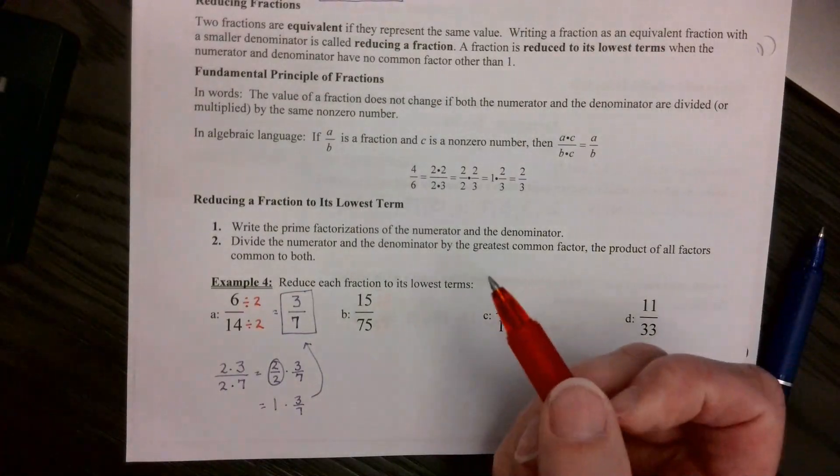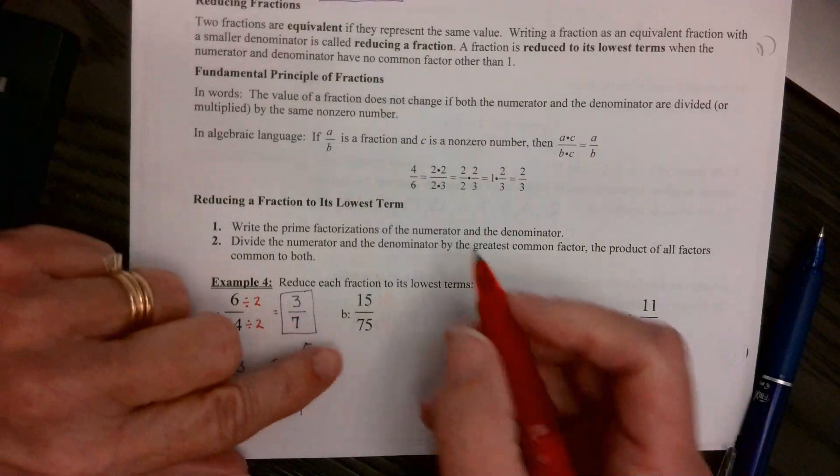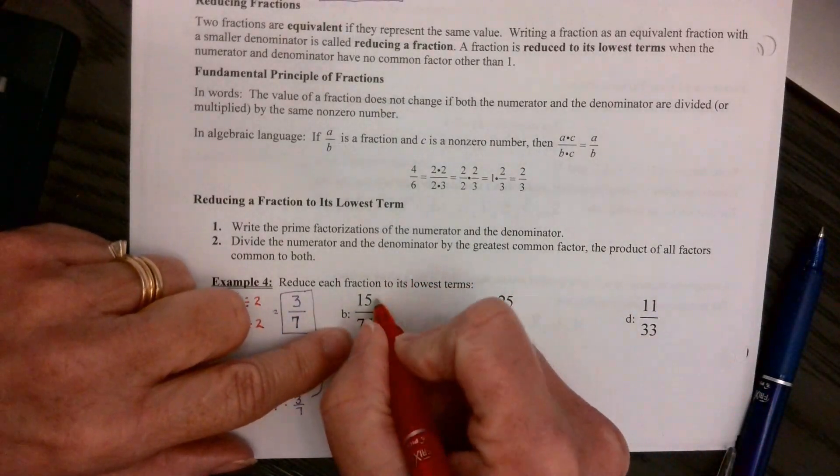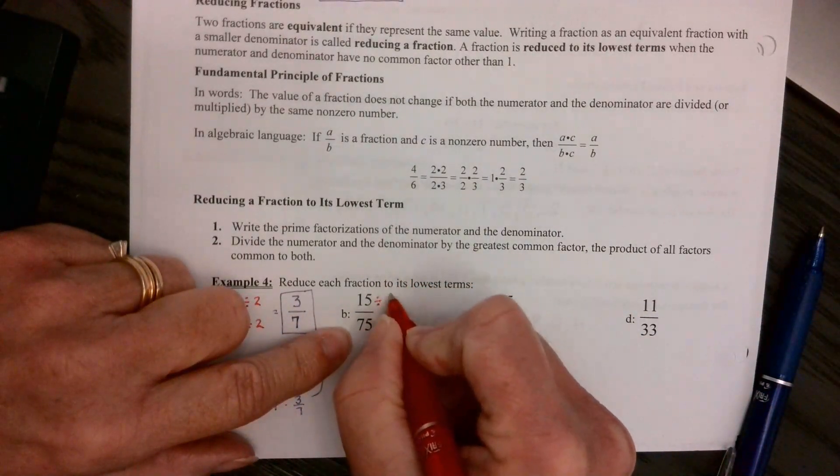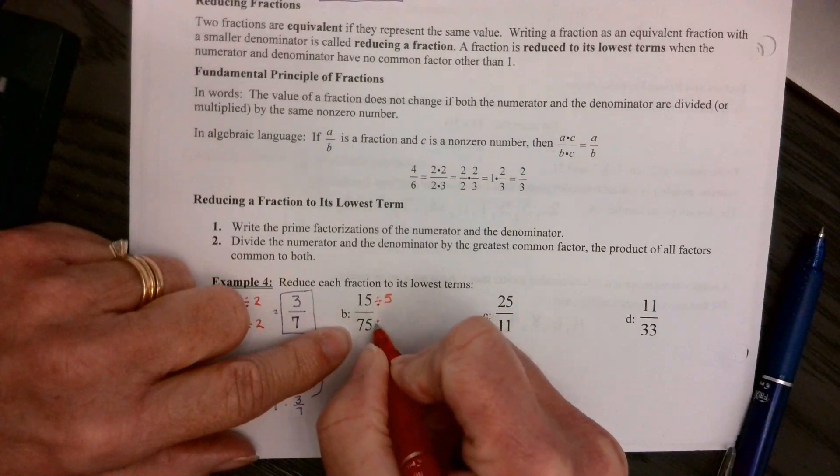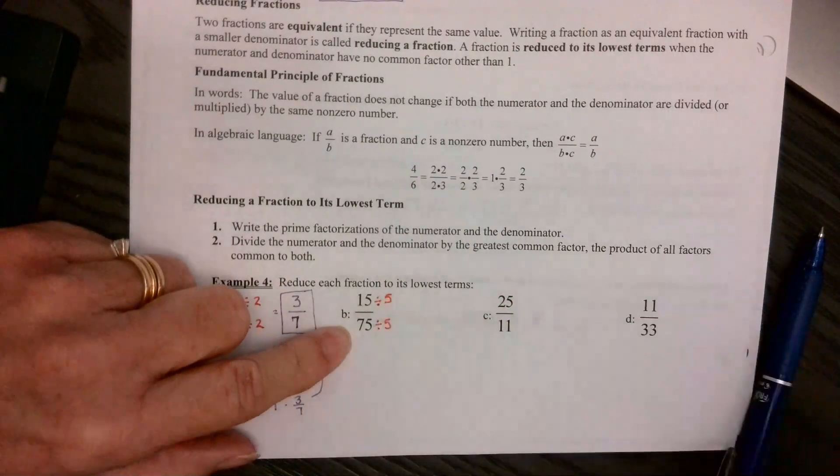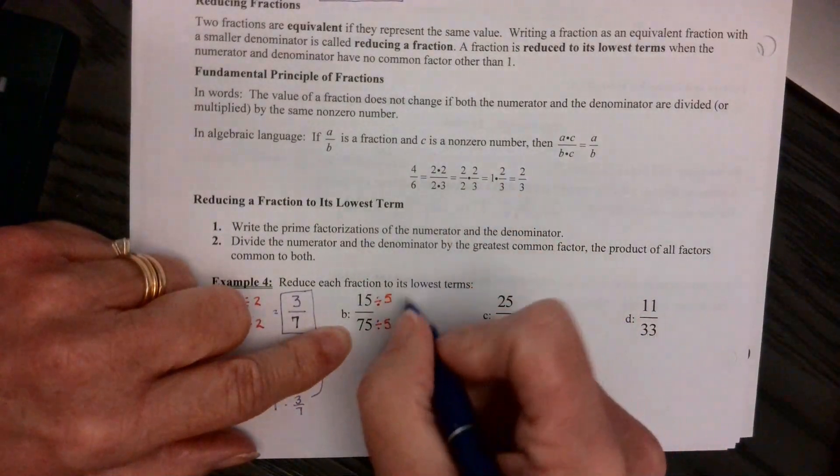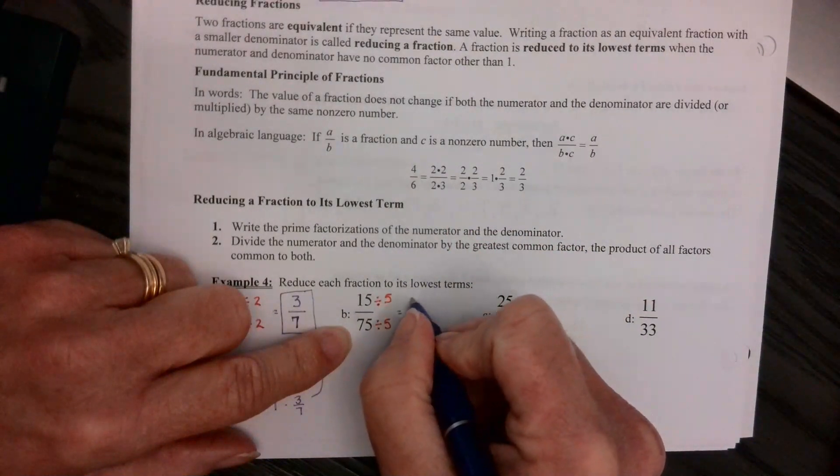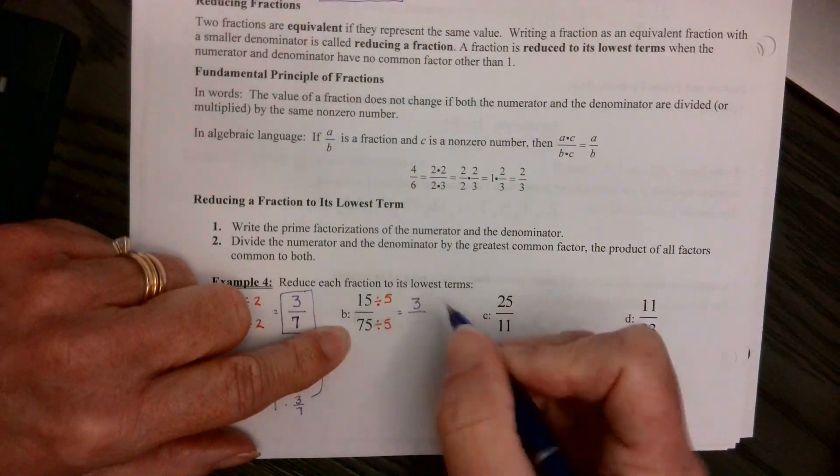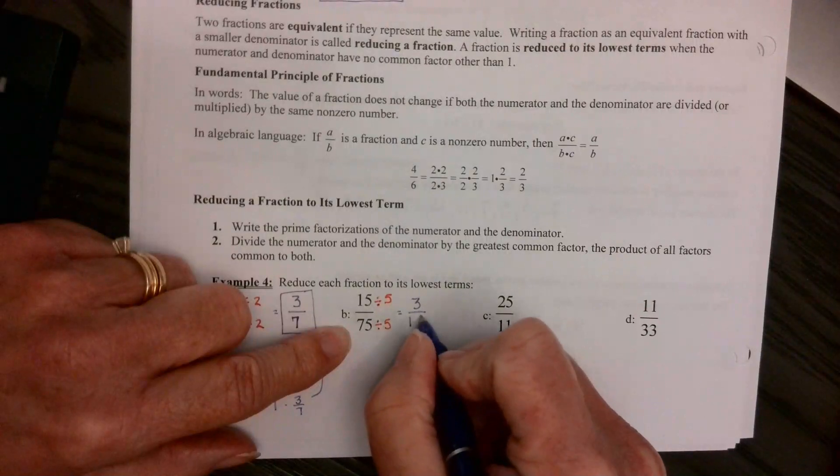Okay, continuing with 1-2, reducing fractions. So I look at these and go, okay, they both, 5 will go into both of them, so I'm going to reduce them by 5. I may have to reduce again, I'm not sure. So 15 divided by 5 gives us 3, and then 75 divided by 5 gives us 15.